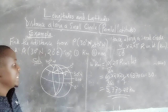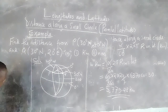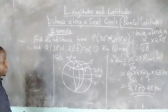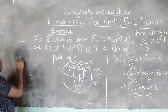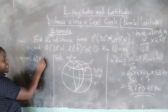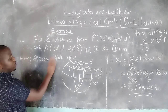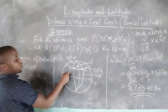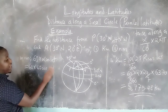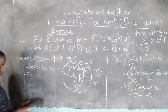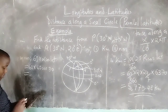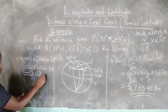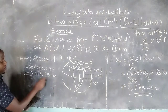We can also find the distance between the two places in nautical miles. In nautical miles we use: 60 × alpha × cos(latitude). So this is 60 × 60 × cos(30°), which gives us 3,117.269 nautical miles.